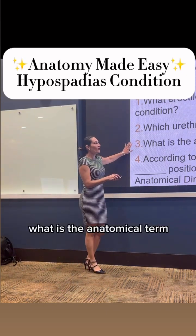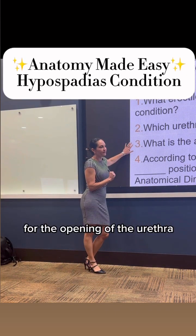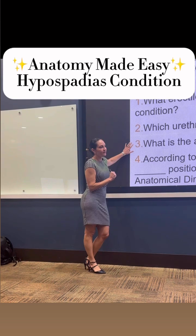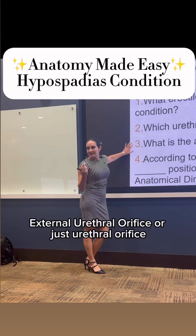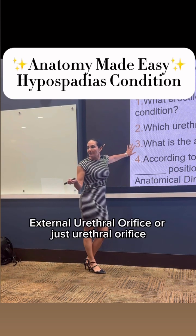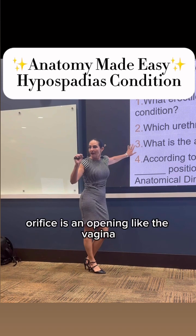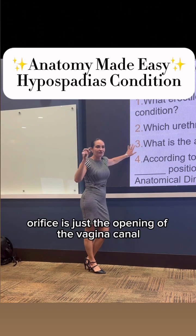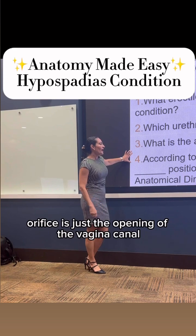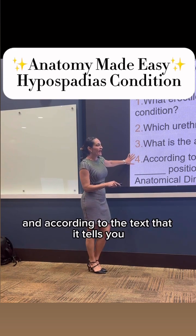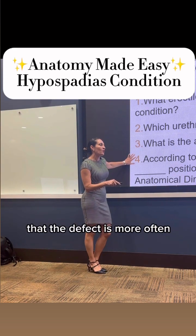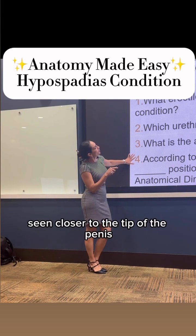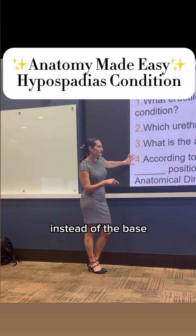What is an anatomical term for the opening of the urethra? External urethral orifice, or just urethral orifice. Orifice is an opening, like the vaginal orifice — it's just the opening of the vaginal canal. And according to the text, the defect is more often seen closer to the tip of the penis instead of the base.